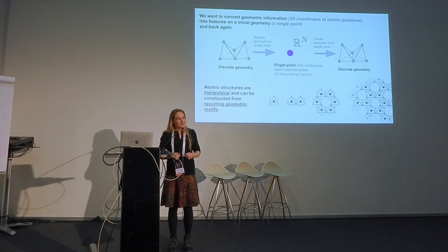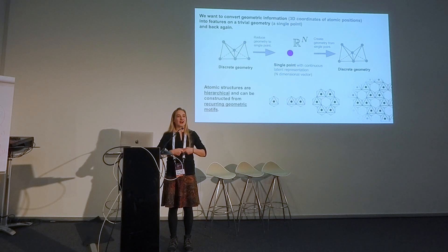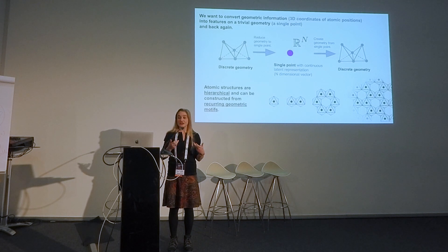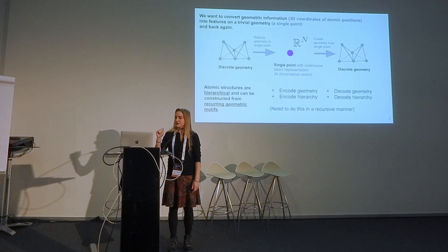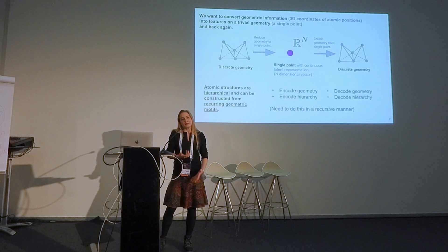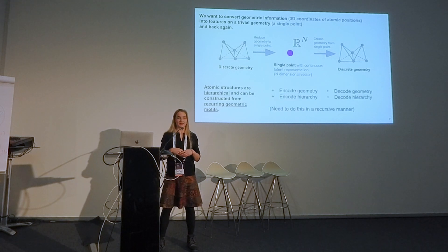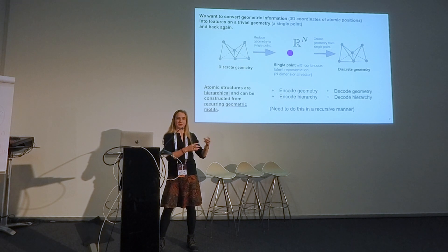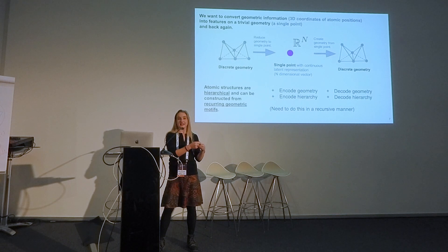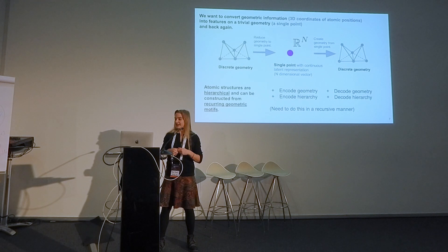I really want to emphasize that I want to use the fact that atomic structures are hierarchical and constructed from recurring geometric motifs — again referencing the octahedron. The way I'm proposing we do this is mirrored: we need to encode the geometry while simultaneously encoding the hierarchy iteratively, and then do the opposite — decode the geometry and decode the hierarchy.